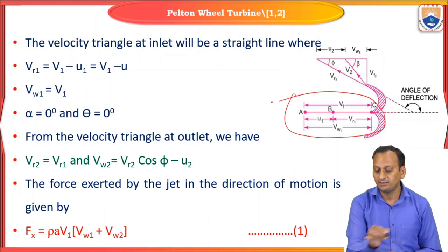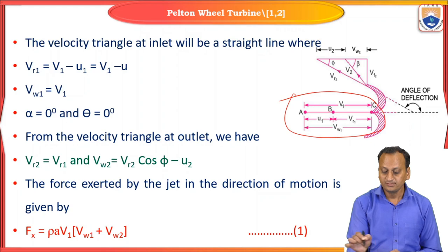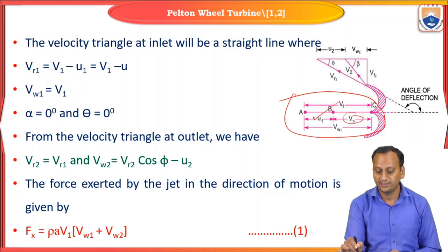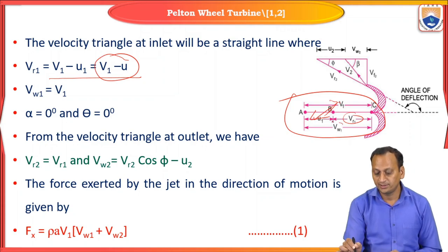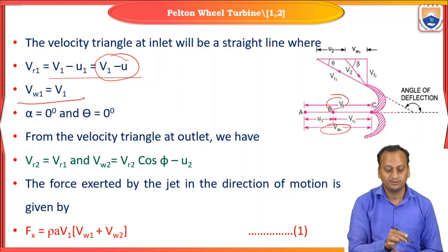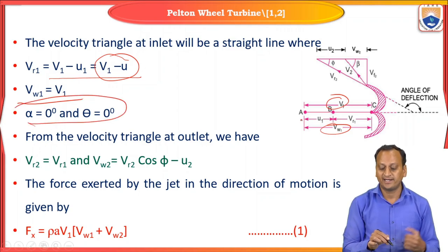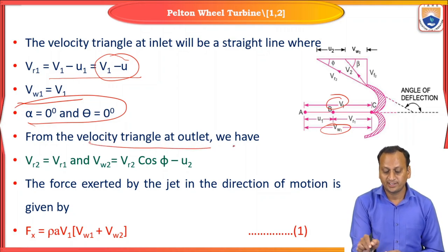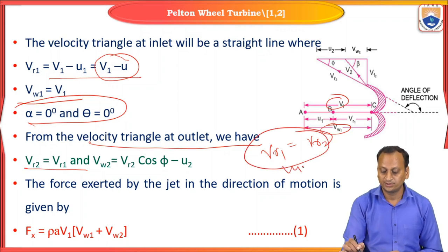From the inlet velocity triangle, which is a straight line: Vr1 = V1 − U1 = V1 − U (since U1 = U2 = U), and VW1 = V1. That is why alpha = 0 and theta = 0, making the velocity triangle a straight line. From the outlet velocity triangle: Vr2 = Vr1 (assumption), and U1 = U2.